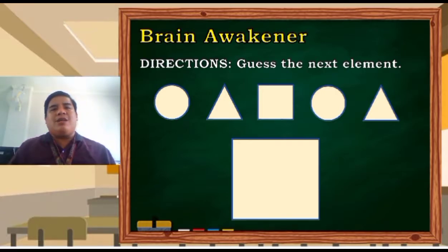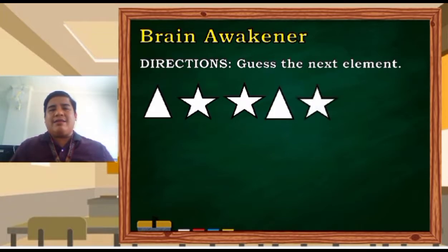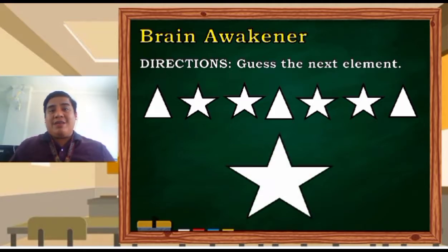Let's have another one. We have a triangle, a star, a star, a triangle, a star, a star, a triangle. What do you think is the next shape? That's right! We have a star because the pattern is an alternation of one triangle and two stars. Easy, isn't it?